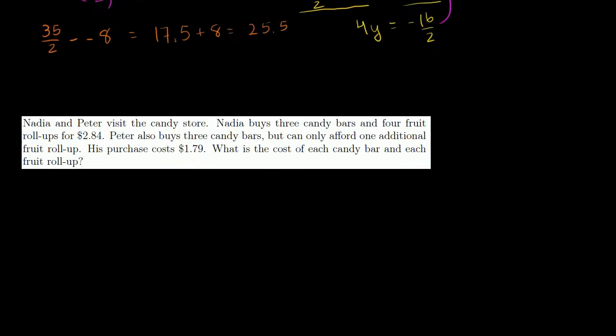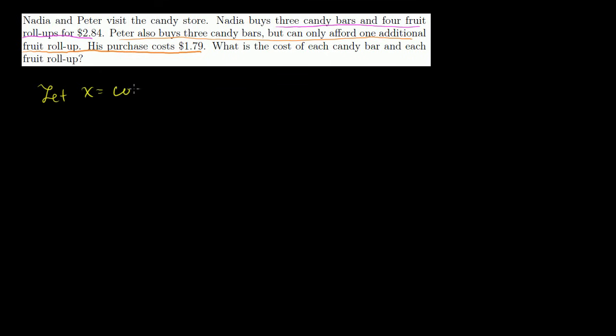Now let's use our newly found elimination skills to tackle a word problem. Nadia and Peter visit the candy store. Nadia buys three candy bars and four fruit roll-ups for $2.84. Peter also buys three candy bars but can only afford one additional fruit roll-up; his purchase costs $1.79. What is the cost of each candy bar and each fruit roll-up? Let x equal the cost of a candy bar and y equal the cost of a fruit roll-up.